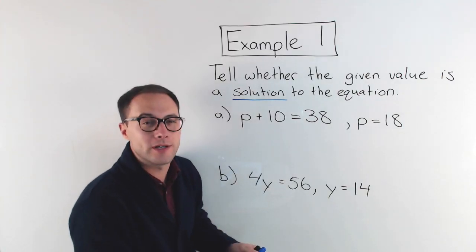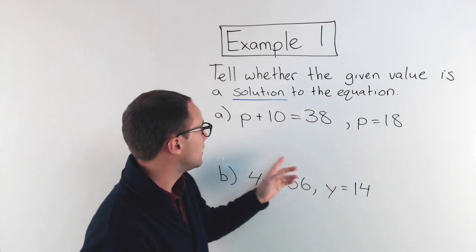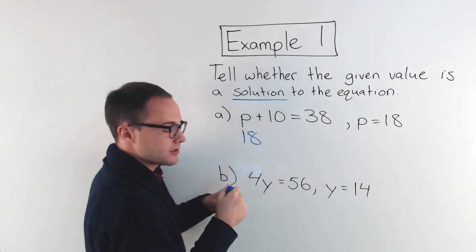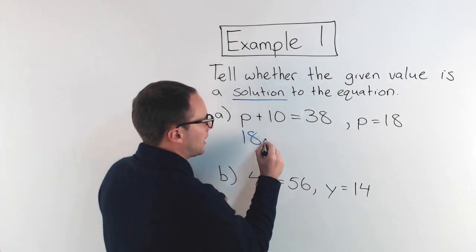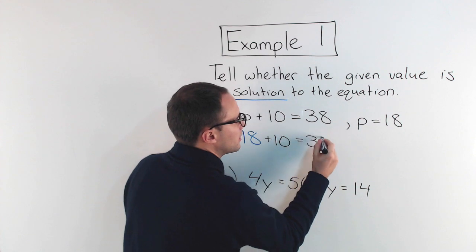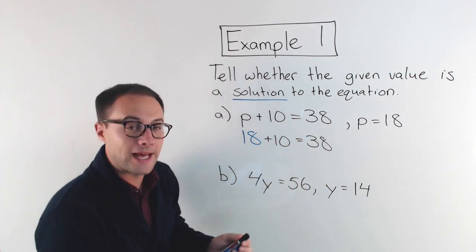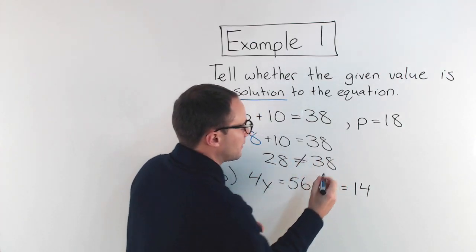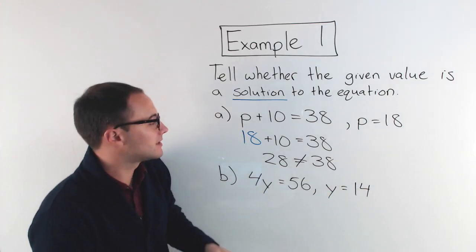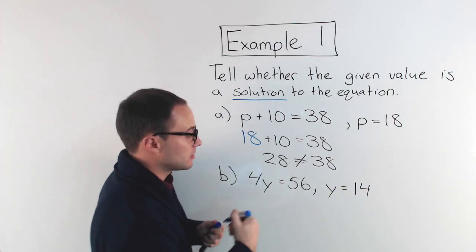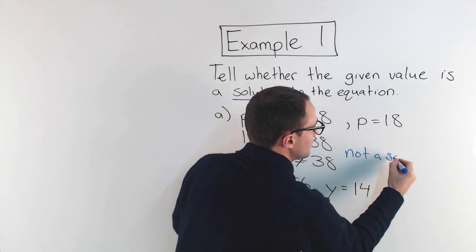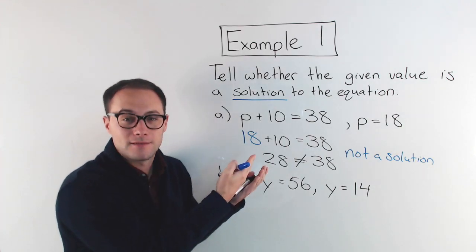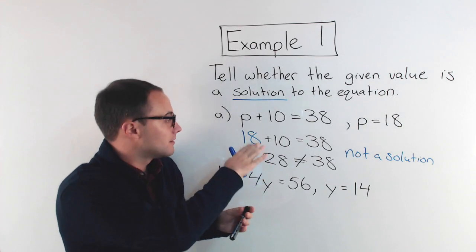To figure that out, all we do is substitute. We're saying p is equal to 18, so I'm going to substitute 18 in for p. I get 18 plus 10 is equal to 38. Well, 18 plus 10 is 28, which is not equal to 38. The fact that those are not equal means that 18 is not a solution, because this equation is not true when 18 is substituted for p.